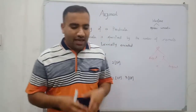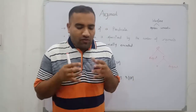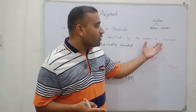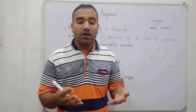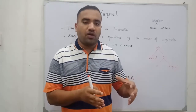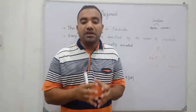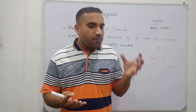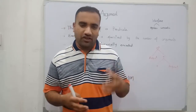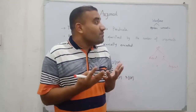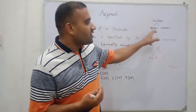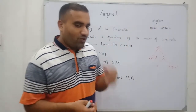Within the predicate we have a number of valencies — a number of arguments. Within the predicate structure we can have one argument, two arguments, or three arguments. There is a variety of argument structures within the predicate, and when we talk about predicate we are talking about semantics.